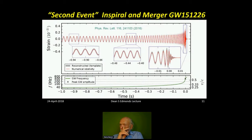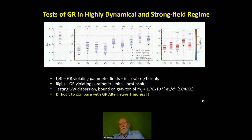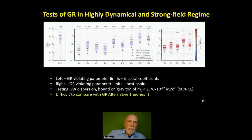We look at different pieces of the signals in detail and compare them with Einstein's equations to test general relativity. We get a series of measurements of the parameters of Einstein's equations. Everything we see so far, to all the accuracy we have, agrees with general relativity.